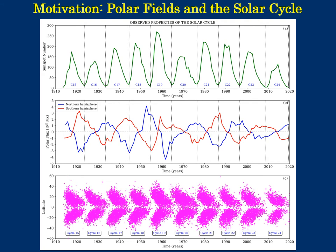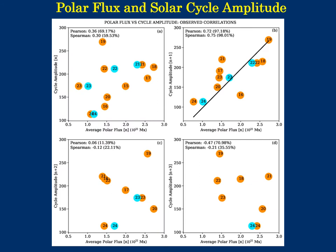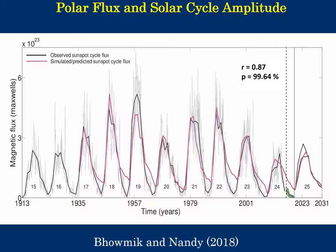The poloidal field, of which the polar field is a surface manifestation, is then transported into the solar convection zone where the toroidal component of the subsequent solar cycle is produced. The correlation between the polar field of cycle n and the amplitude of cycle n+1 is very well known. This implies that the dynamics leading to the polar field build-up bridges the ongoing cycle to the following cycle.